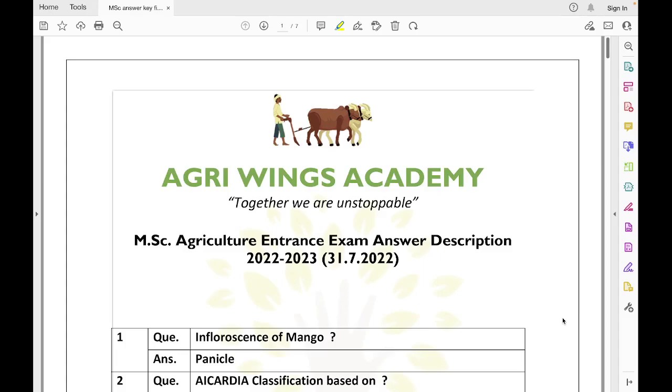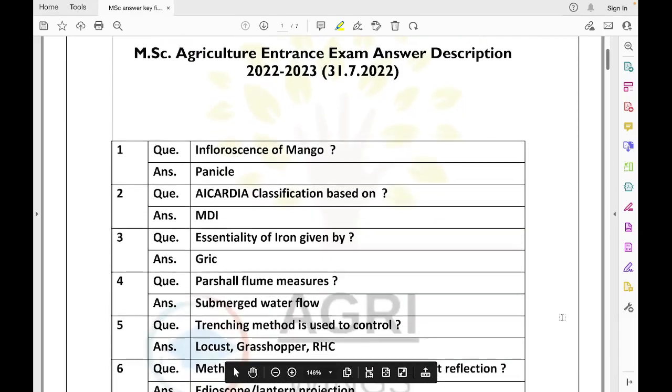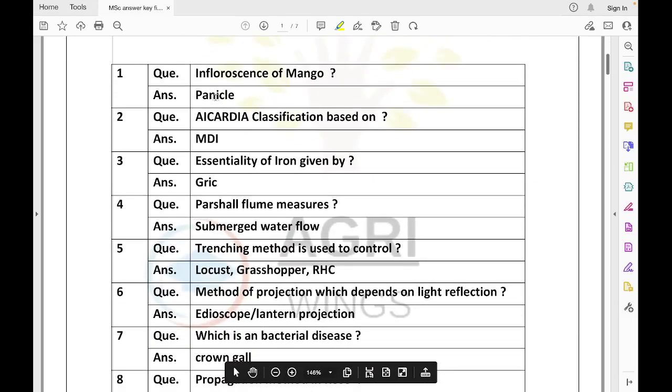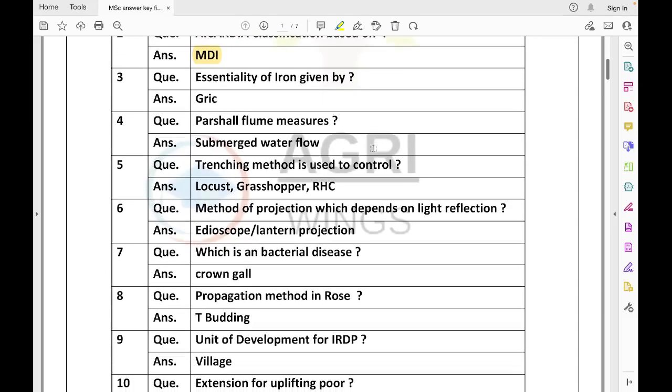So let's discuss the questions. First question is inflorescence of mango. Mango's inflorescence is called panicle. Among the options were umbel and other confusing options. Next is ICARDA, some institute in Hyderabad. The classification they gave was based on moisture deficit index. Essentiality of iron was given by Gris.